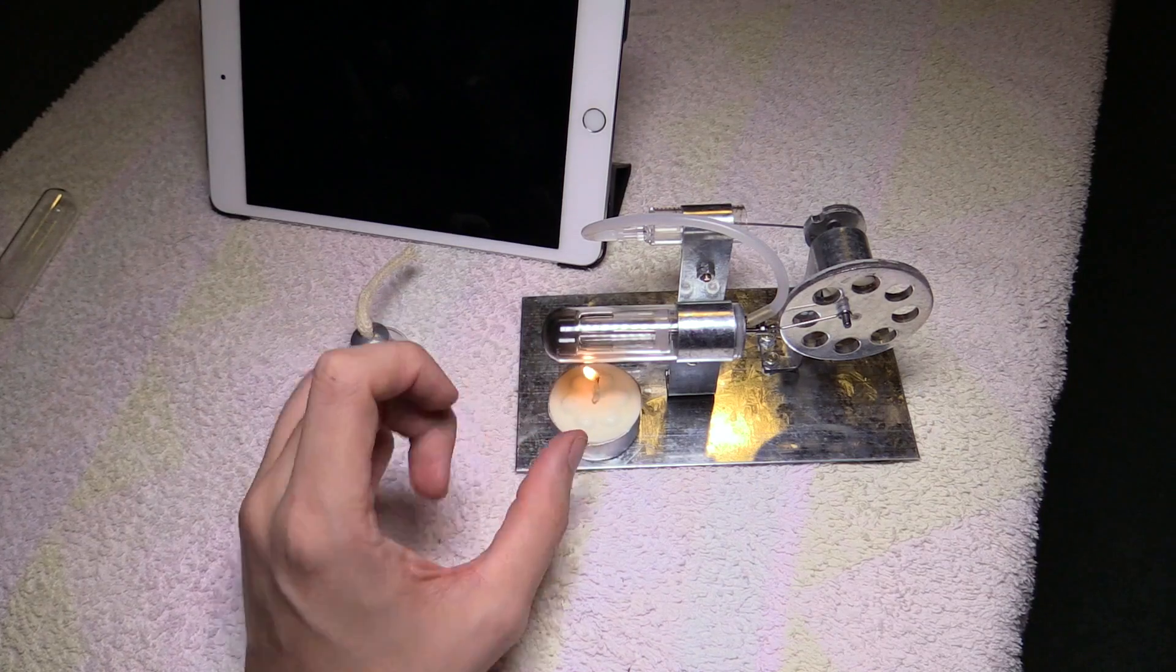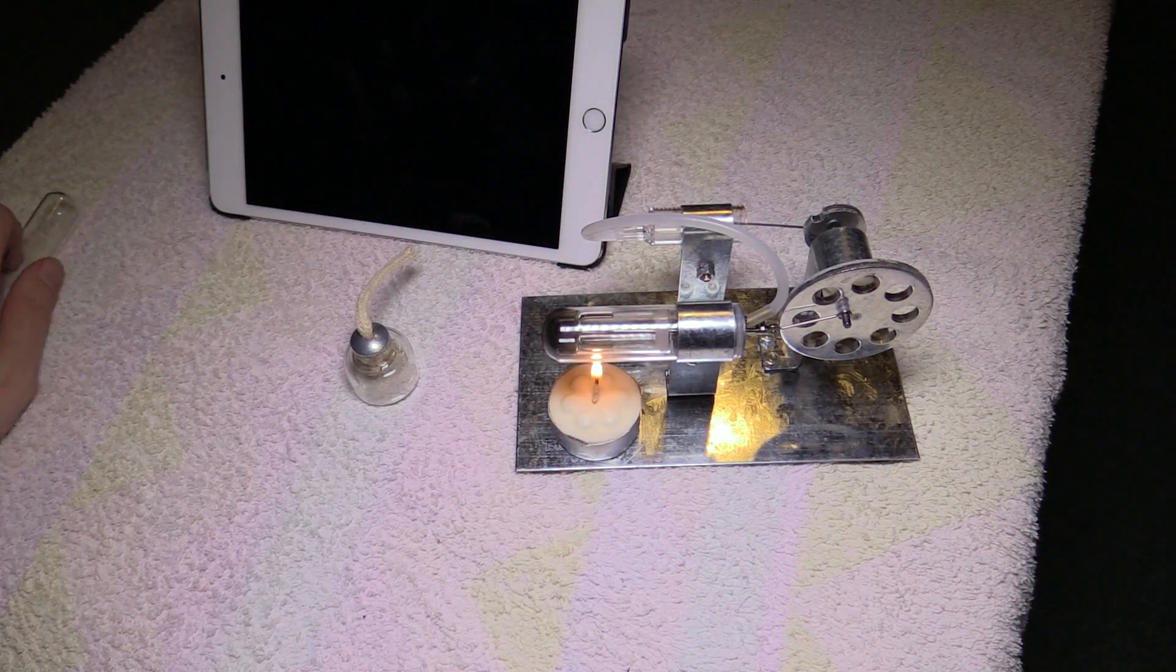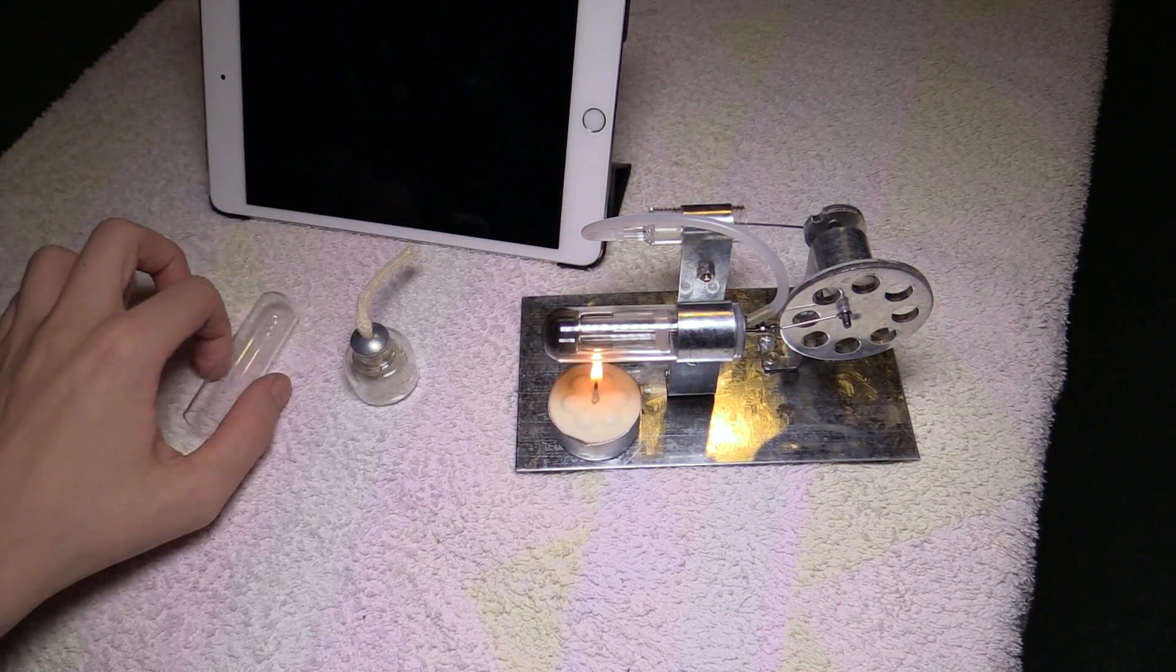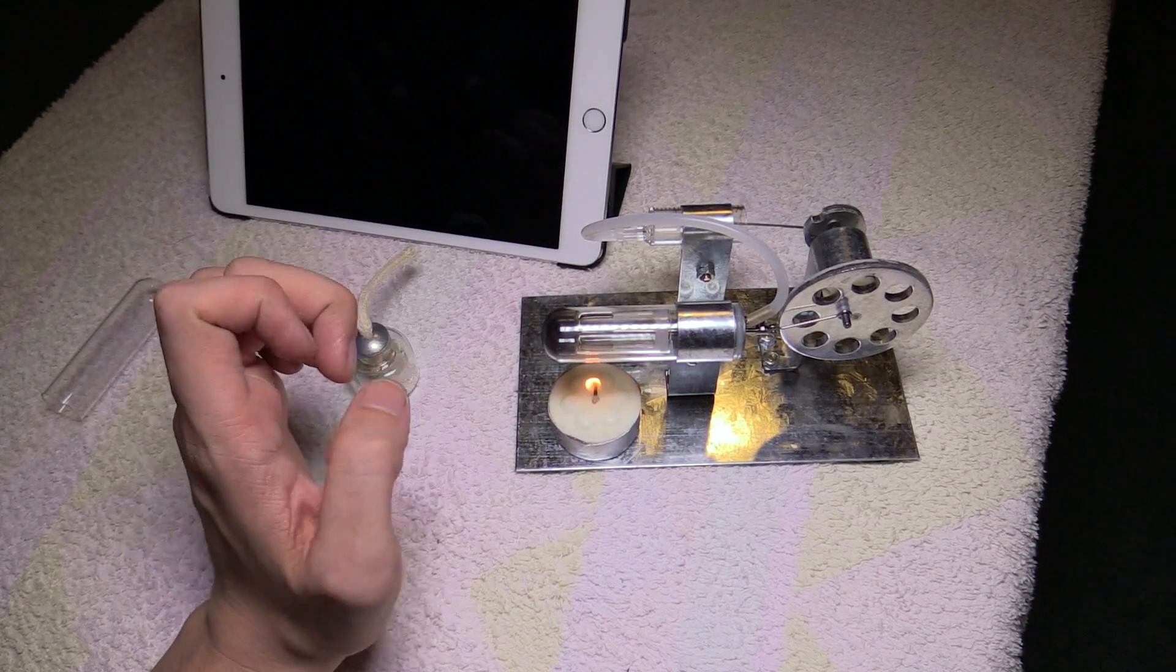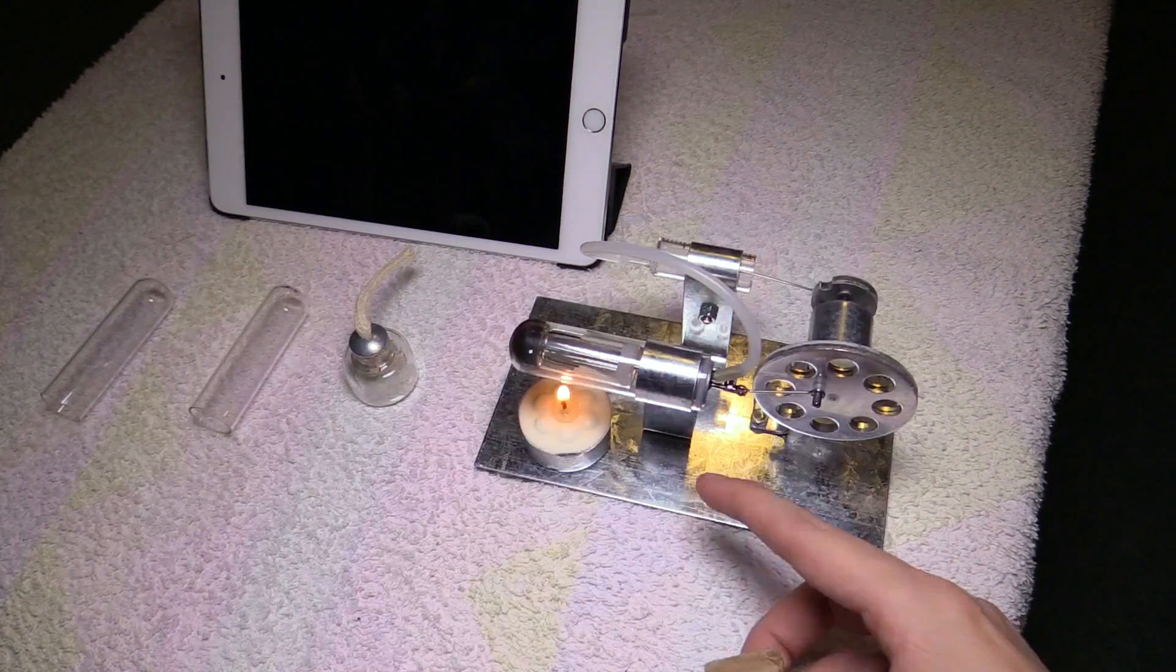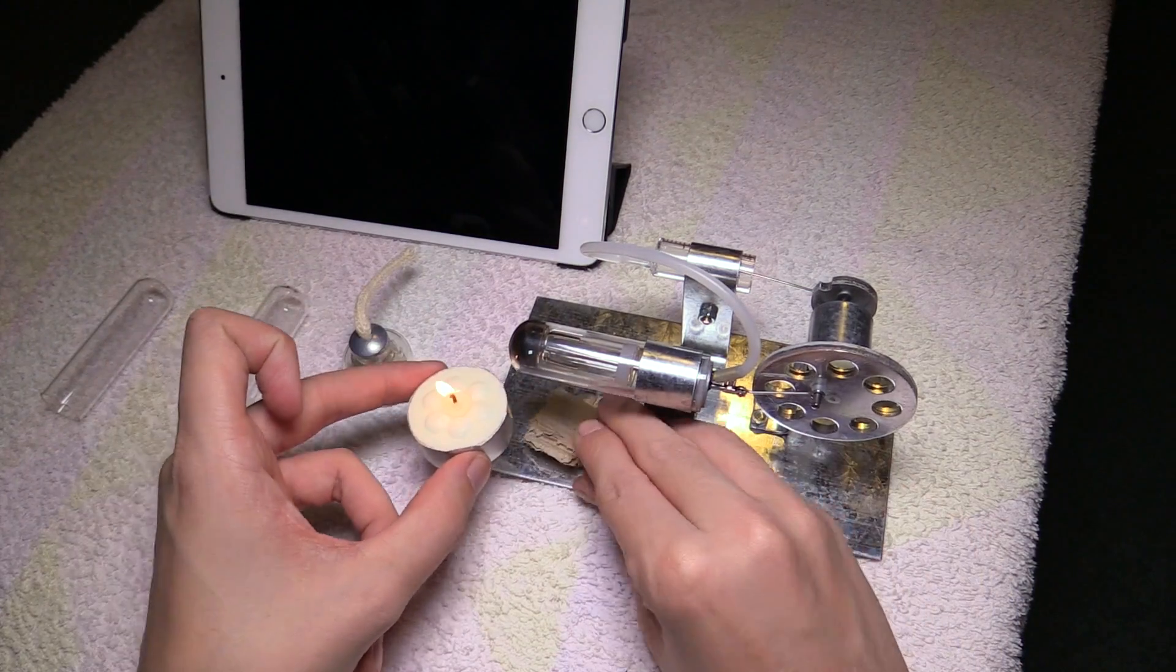Now, this might make the tube a little bit black, but they do give us two extra ones, so I can swap it out or just wipe it off. I do want to get it working before I give it to them because it might require a little bit of fine tuning. And the candle's a little bit low, so let's raise it up on some cardboard.